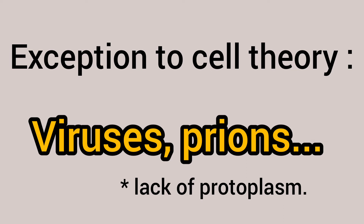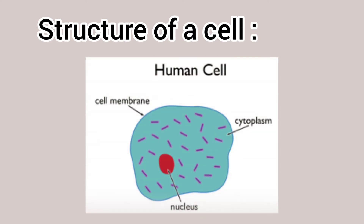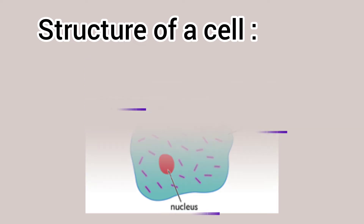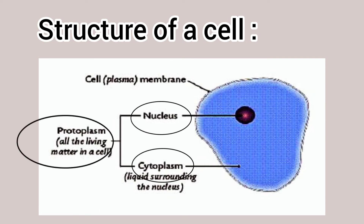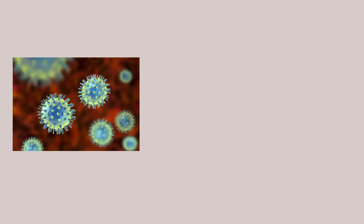Now let's look at cell structure and protoplasm. A normal cell has an outer cell wall, cytoplasm, and a nucleus. The major structures are like a cell. The nucleus and cytoplasm together are called protoplasm. Components not part of the protoplasm are not directly involved in the living functions of the cell.